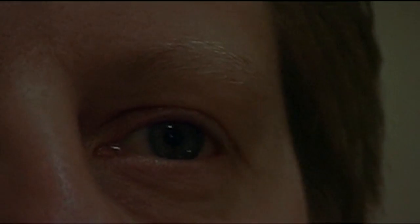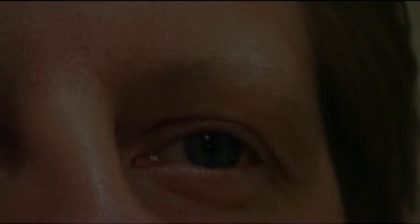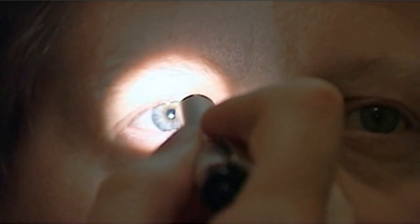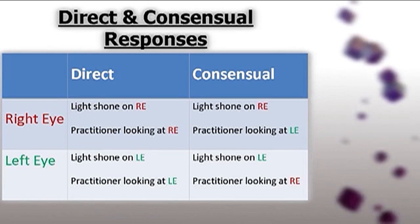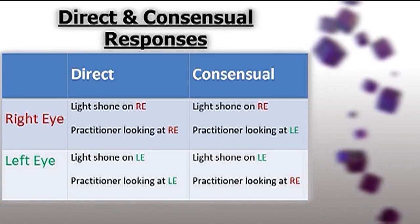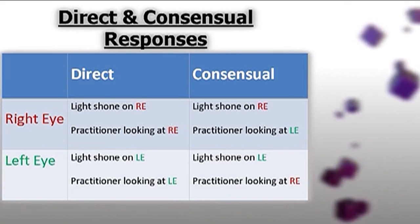When measuring the consensual response, you will be looking at the fellow eye — the eye which has not had the light placed on it. You should see an associated pupil meiosis when the other eye has light in it, and you should also see a consensual dilation when light is removed from the fellow eye. This direct and consensual response would also be checked for the other eye, so you would then bring the pen torch in from the other side, directing it into the opposite eye.